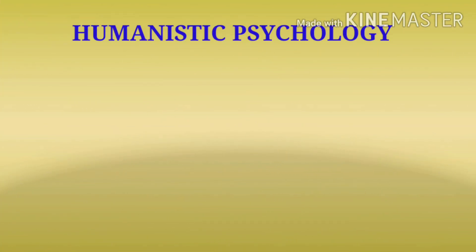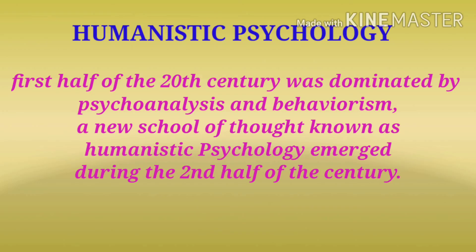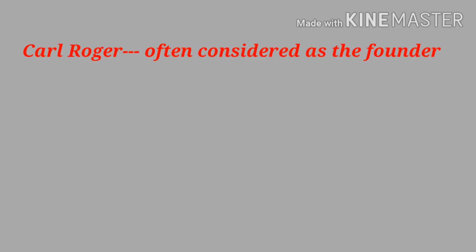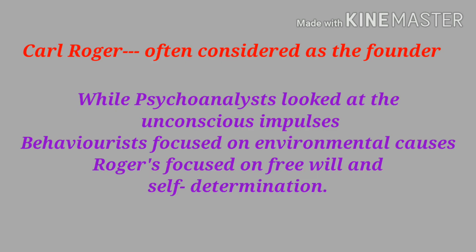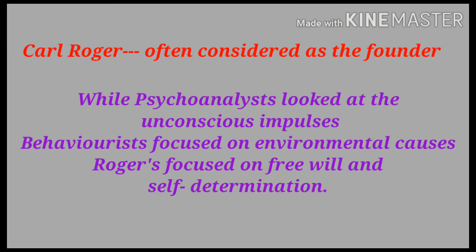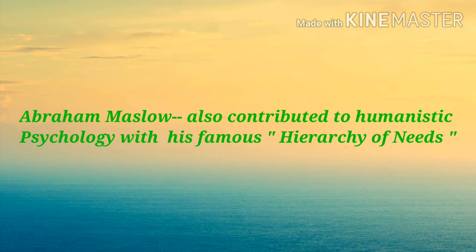The next school of psychology is humanistic psychology. While the first half of the 20th century was dominated by psychoanalysis and behaviorism, a new school known as humanistic psychology emerged during the second half of the century. American psychologist Carl Rogers is often considered one of the founders of this school. While psychoanalysts looked at unconscious impulses and behaviorists focused on environmental causes, Rogers believed strongly in the power of free will and self-determination. Psychologist Abraham Maslow also contributed with his famous hierarchy of needs theory of human motivation, suggesting that people are motivated by increasingly complex needs, pursuing higher-level needs once basic ones are fulfilled.